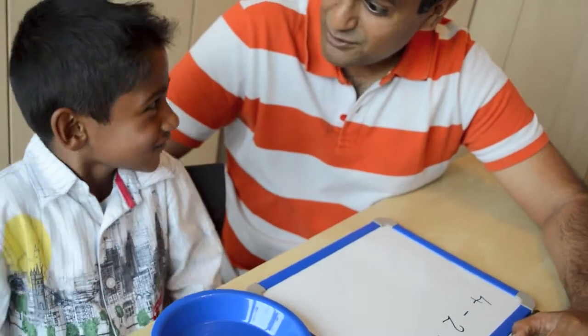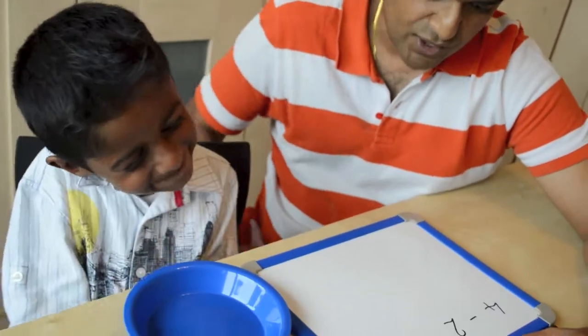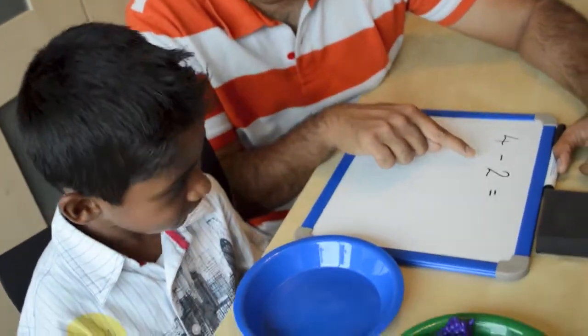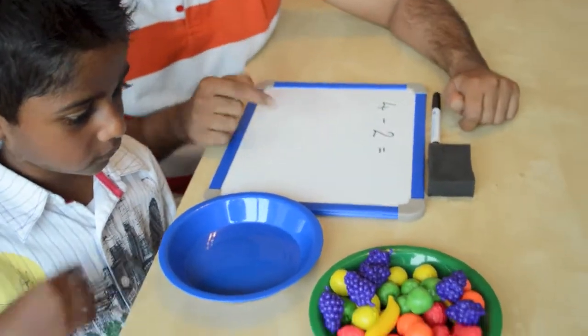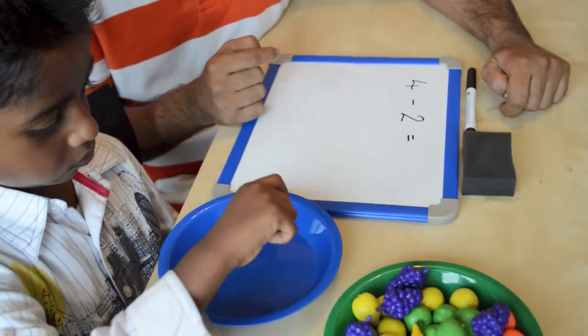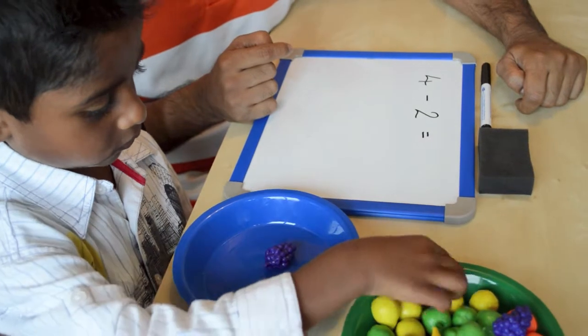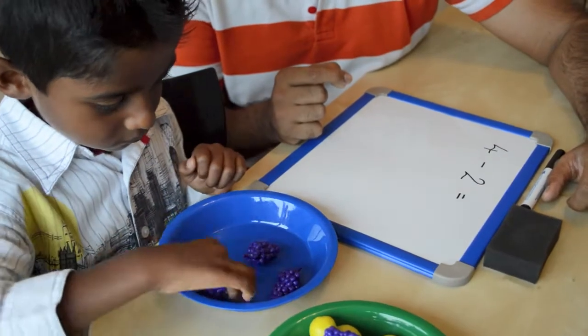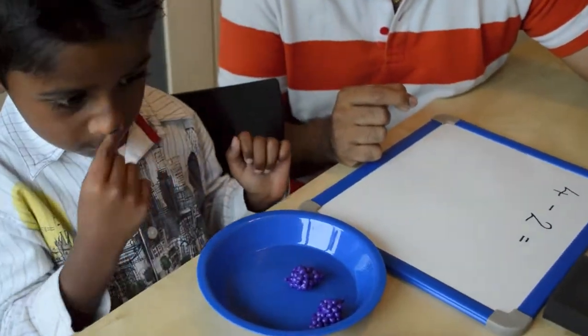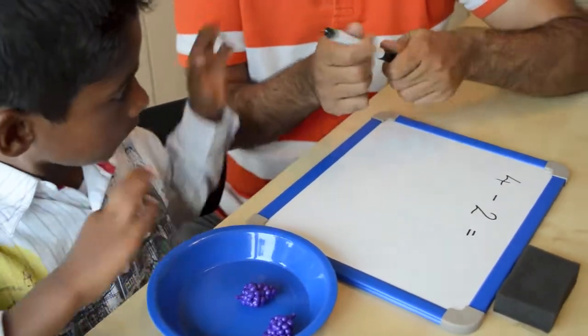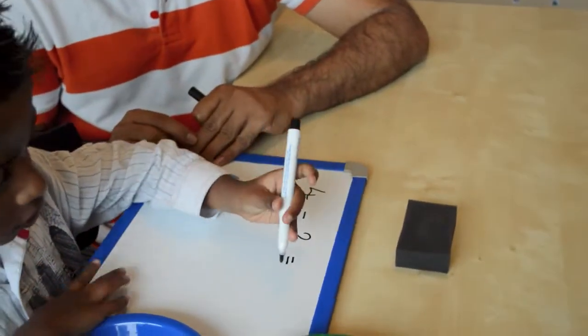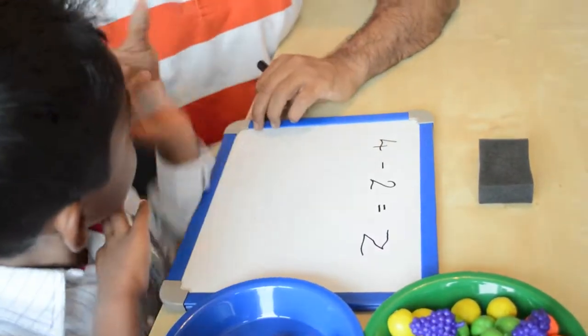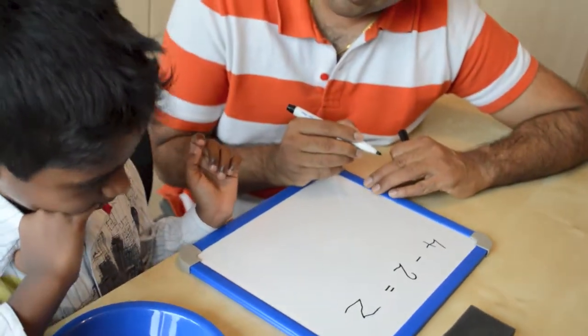Shall we move on to taking away now, because you've done all the adding, haven't you? So our first sum is going to be four take away two. Can you give me four grapes please in the bowl? And can you take away two of those grapes please? And how many grapes are left in the bowl? Two. Would you like to write down the answer two next to the equal sign? That's a number two.